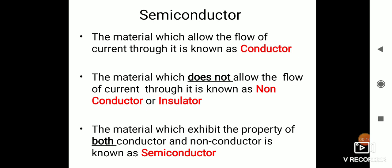Electronic materials — that means the materials which are used in an electronic field — are broadly classified into two types: conductor and non-conductor. The material which allows the flow of current through it is known as a conductor.